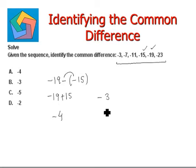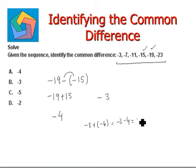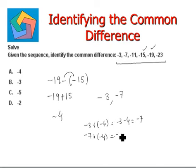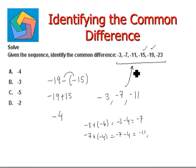Let's verify: starting with negative 3, add negative 4 to get negative 7. Then negative 7 plus negative 4 equals negative 11. Our terms are matching the given sequence, so negative 4 is the correct common difference, which is option A.